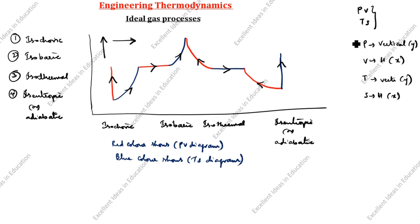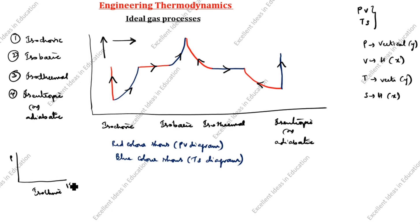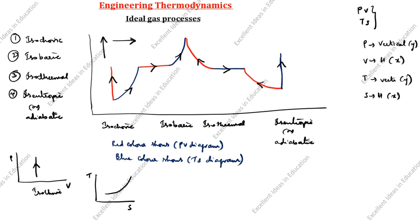Now we will see the detailed PV and TS diagrams for each process. First, for isochoric: the PV diagram comes straight with the arrow going this way. For the TS diagram of isochoric, the parabolic curve goes up.